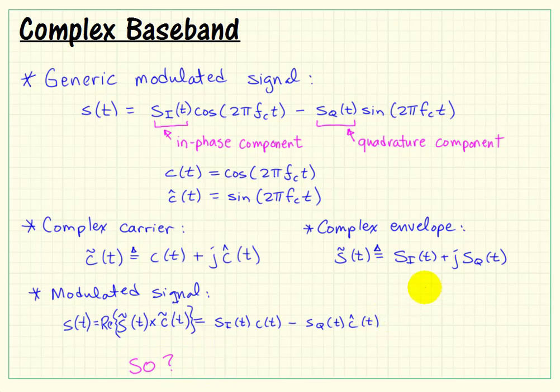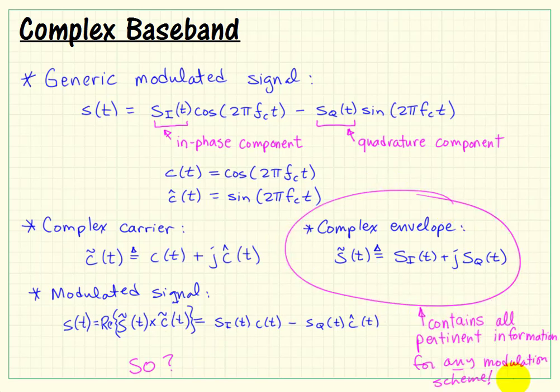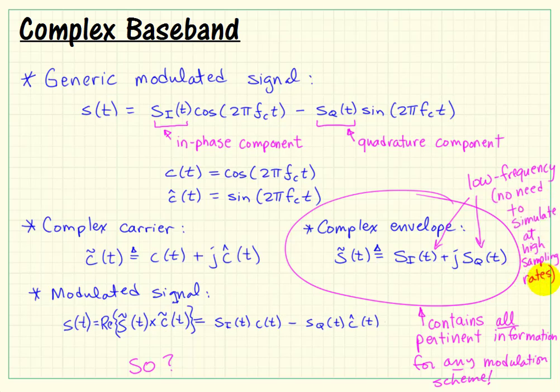Well, it turns out that this so-called complex envelope contains all the pertinent information for any modulation scheme you choose to name, whether or not it's ASK or PSK, QAM, FSK, anything. And the nice thing here is that these two terms, the so-called baseband terms, are low frequency, and there's no need to simulate at high sampling rates, as would be suggested if we were trying to simulate to accommodate our modulated signal.